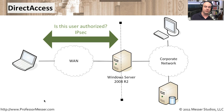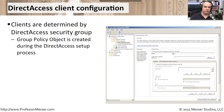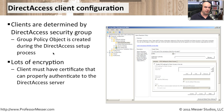They can now use printers, file servers, database servers, and applications just as if they were sitting at the corporate office. For direct access to be configured properly on the client, you have to add the client to a specific security group determined during the setup of direct access on the Windows Server 2008 computer. A group policy object is created that you can use to set different parameters for the deployment and use of direct access. You must ensure the client machine has a certificate that will authenticate properly with the direct access server.